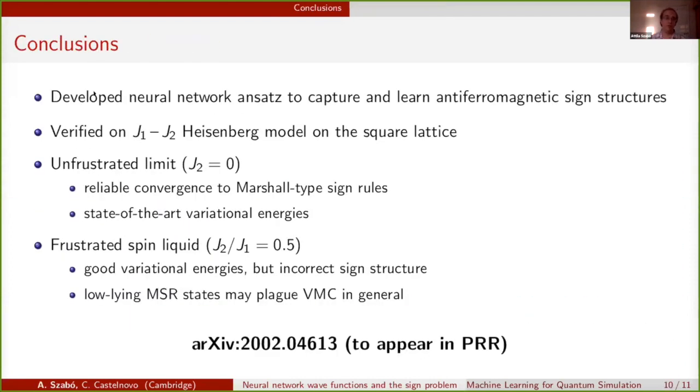Just to conclude, we developed the neural network ansatz to capture and learn antiferromagnetic sign structures, and we verified them on the frustrated Heisenberg model on the square lattice. We found that it works excellently for the unfrustrated case, but in the frustrated case, we found that it instead homes in on low energy variational states with a Marshall sign rule, which might have some broader implications for variational Monte Carlo in general.